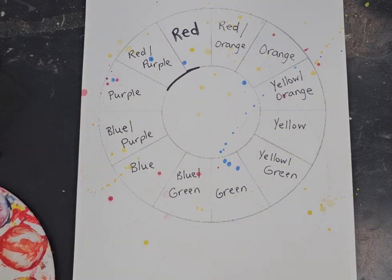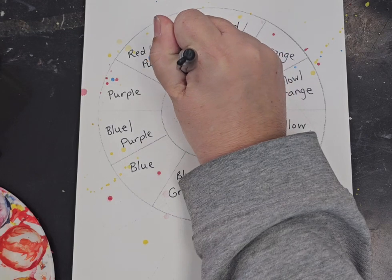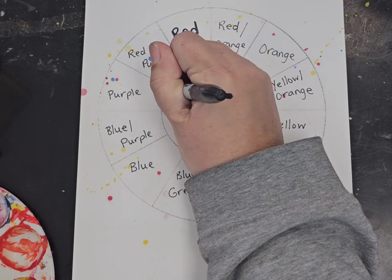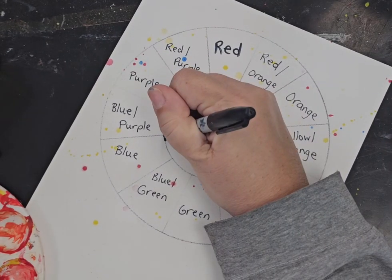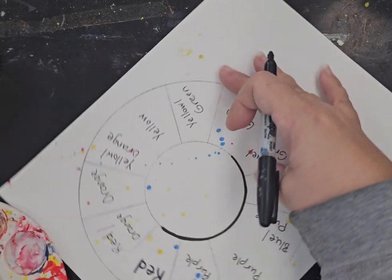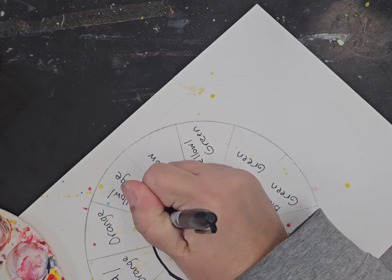You're going to take your sharpie and you're going to carefully go around your circle. Now you guys worked really hard on this so I want you to really take your time. If you make it too thick, you can go thinner. If you don't like the thick sharpie, you could also use this thin sharpie. I don't care which one you use, but I want you to go over your color wheel, every part of it.